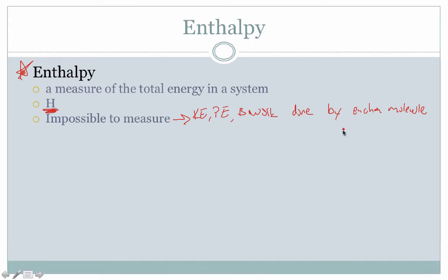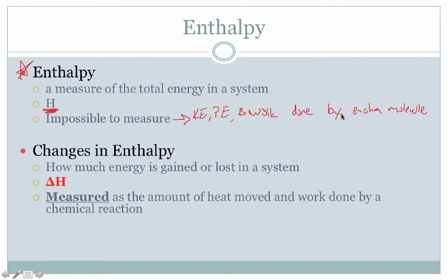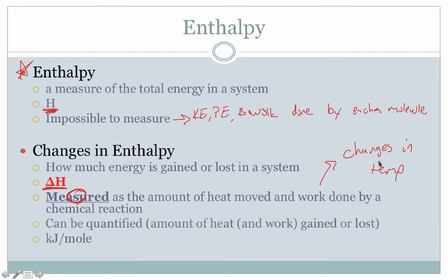Instead of trying to measure enthalpy directly, what we're usually more interested in is measuring changes in energy, how much heat energy is gained or lost during a system, and refer to this with the symbol delta H, delta being the symbol for change. This value can be measured, and it's measured as the amount of heat that is moved and or worked on by a chemical system, and we can see this via changes in temperature. So even though we can't figure out how much enthalpy a system has, we can figure out what changes occur to that enthalpy by keeping track of changes in temperature. This can be quantified, meaning we can write down a number as the amount of heat and work that's gained or lost in a system, and we talk about delta H typically in the units of kilojoules per mole of chemical that's actually reacted.